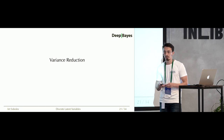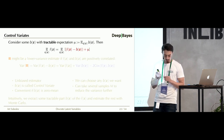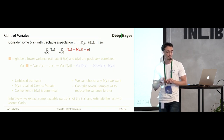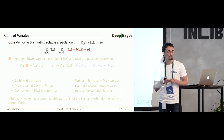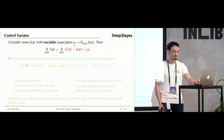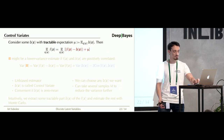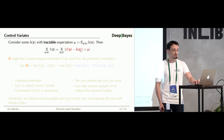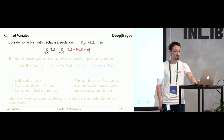To get rid of the train-test mismatch, we should train the discrete case directly — and relaxation-based methods won't help. So let's get back to REINFORCE and try to improve it by reducing its variance. We'll use an old statistical technique called control variates. Suppose you have some function b(Z) with a tractable expectation — so simple you can compute E[b(Z)] analytically and define this as mu. Then E[f(Z)] can be shown to equal the expectation of f(Z) minus b(Z) plus mu, which corrects the bias introduced by subtracting b.